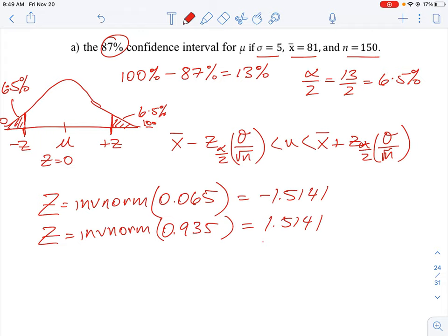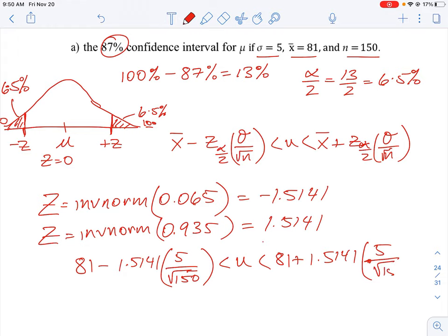So to do the interval is just simply plugging in the values now. So we know we have 81 minus our Z score here, which is going to be 1.5141 times our standard deviation of 5 all over the square root of our sample size, which is 150. So we'll have to convert that into a number. We're going to do our inequality, and then our other side is going to be the exact same calculation, except instead of subtracting, we just add their values to it. And that is going to be 150.